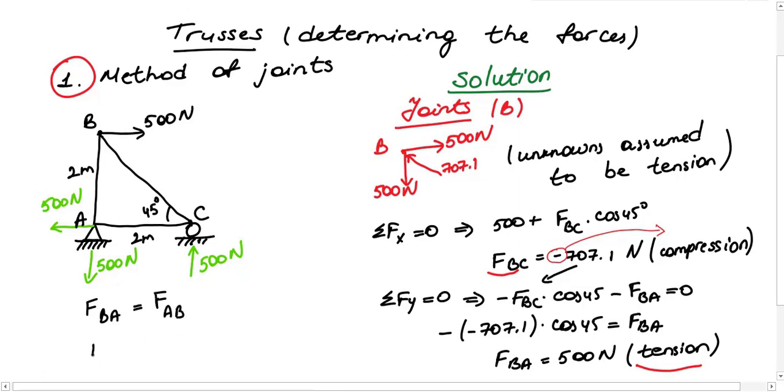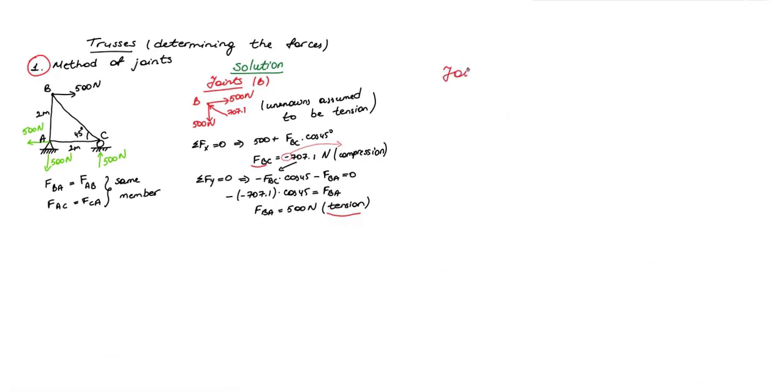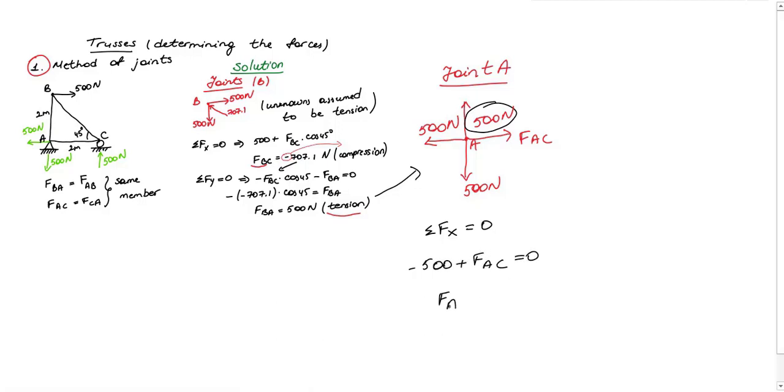Forces on the same member will be equal in terms of direction and magnitude. If one of them is tension, other one will always be tension. Joint A is a lot simpler because we already found FAB which is 500 Newton. To find last unknown, it is enough just to write equilibrium equation for X direction and from that we find FAC as 500 Newton.